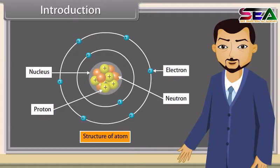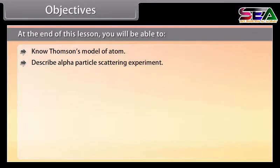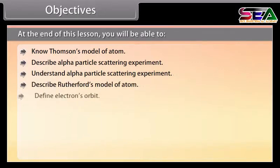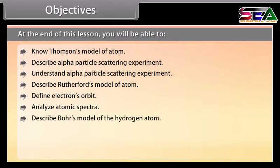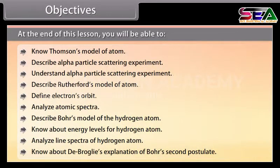Students, let us discover more about atoms. At the end of this lesson, you'll be able to: know Thomson's model of atom, describe the alpha particle scattering experiment, describe Rutherford's model of atom, define electron orbits, analyze atomic spectra, describe Bohr's model of the hydrogen atom, know about energy levels of the hydrogen atom, analyze line spectra of hydrogen atom, and know about De Broglie's explanation of Bohr's second postulate.